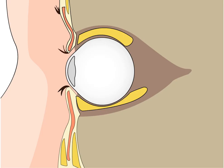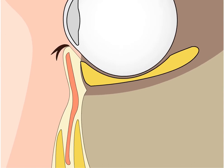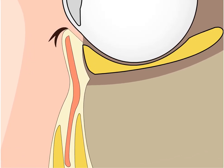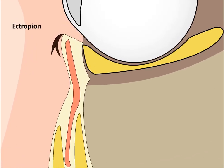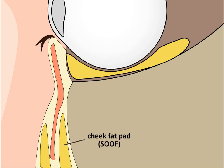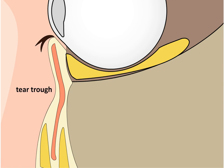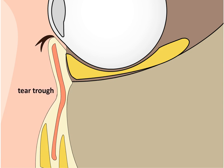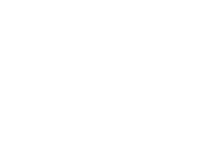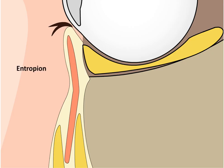Weakening of the structural supports of the lower eyelid can cause the eyelid to roll outwards or sag downwards, called an ectropion. The cheek fat pad, called the suborbicularis oculi fat pad or SOOF, can lose volume or descend simultaneously, causing a hollow appearance at the eye socket rim known as the tear trough. A structurally weakened lower lid can also rotate inwards, called an entropion.